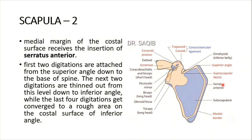The medial margin of the costal surface receives serratus anterior. The first two digitations of serratus anterior are attached from the superior angle down to the base of the spine. The next two digitations take a longer route, thinned out from that level down to the inferior angle. The last four digitations converge to a rough area on the costal surface of the inferior angle.